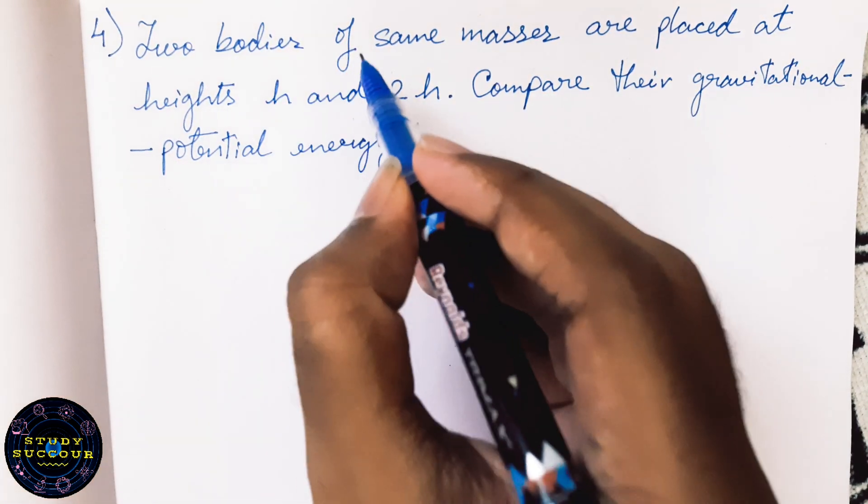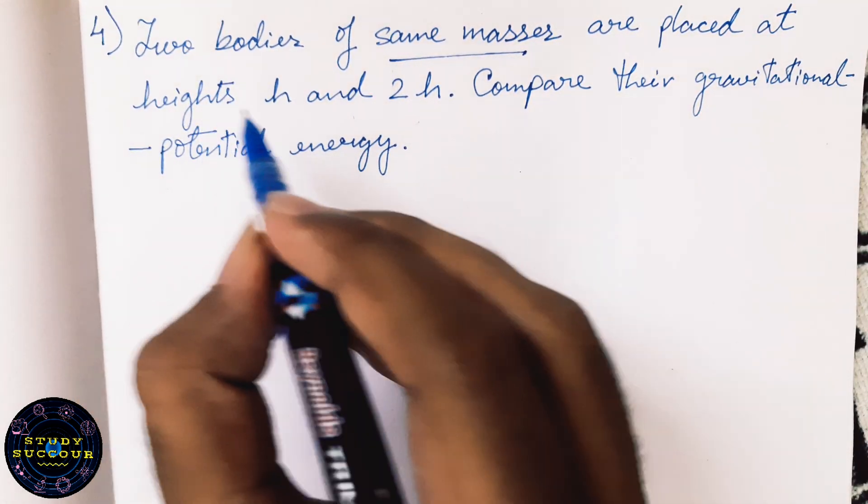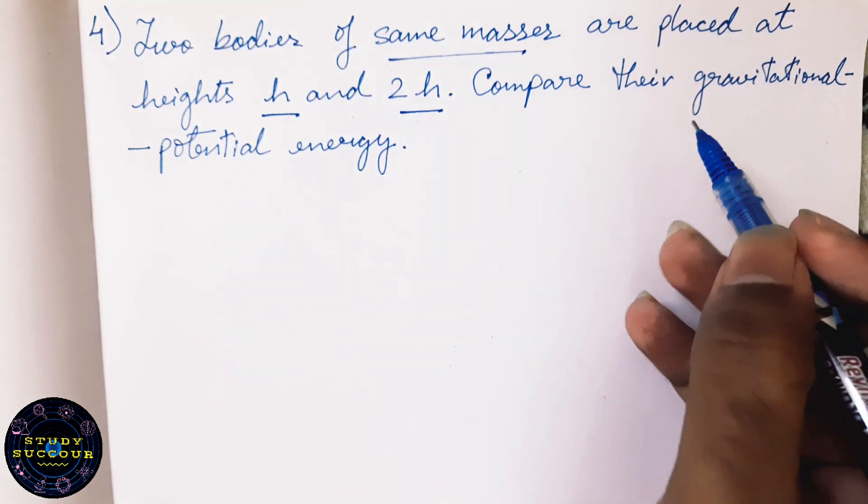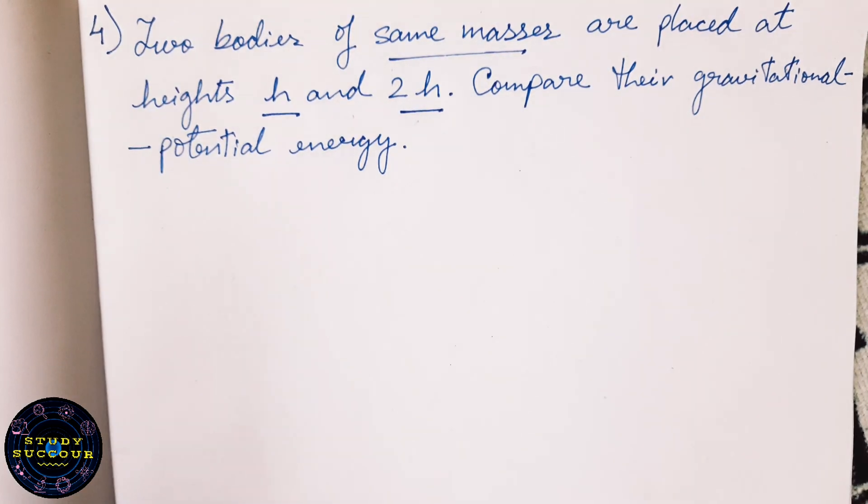Two bodies of same masses are placed at heights H and 2H. Compare their gravitational potential energy.